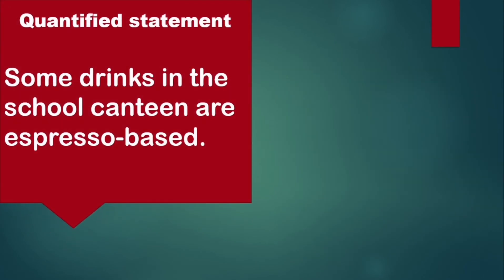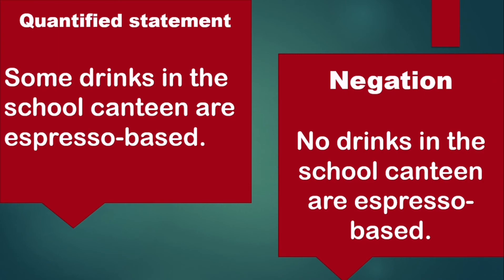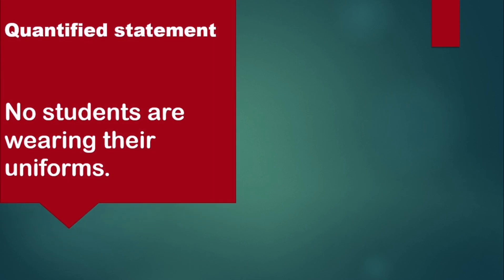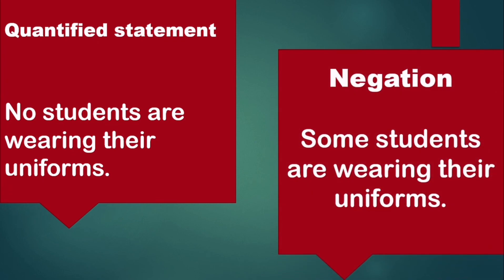Next quantified statement: 'Some drinks in the school canteen are espresso-based.' The negation of that is 'No drinks in the school canteen are espresso-based.' Note that if the statement were 'Some drinks in the school canteen are not espresso-based,' then the negation would start with 'all.' Finally, for the quantified statement 'No students are wearing their school uniforms,' the negation is 'Some students are wearing their school uniforms.'